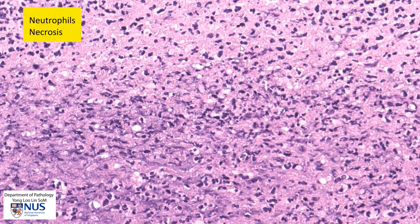Looking at this area within the valve, we can see that there is this bluish area, and when we zoom in here, we can actually appreciate that there are numerous neutrophils with multi-lobed nuclei. So there's lots of acute inflammation, and there's also a lot of this granular pinkish necrotic debris in the background.